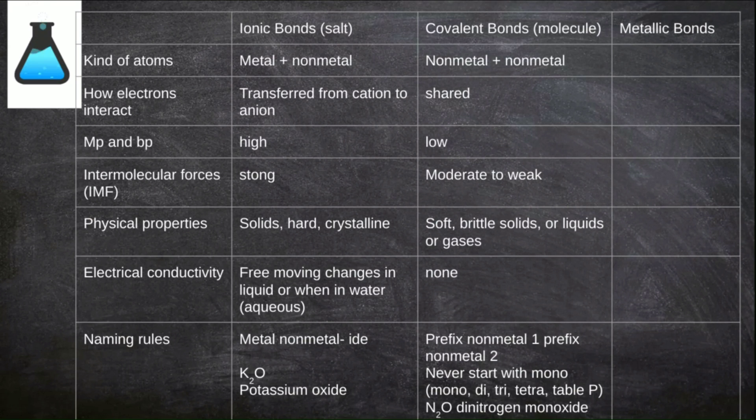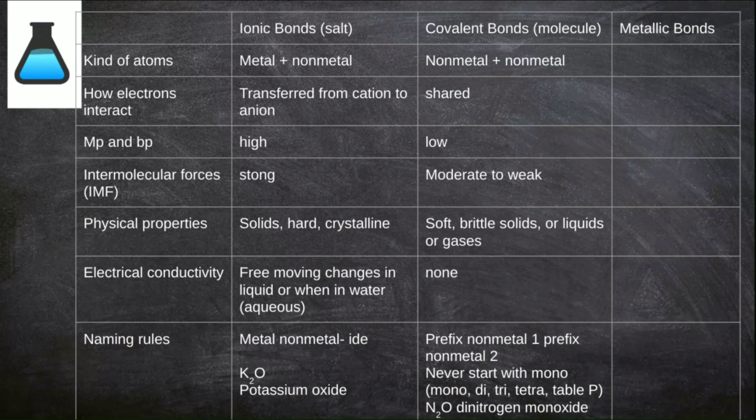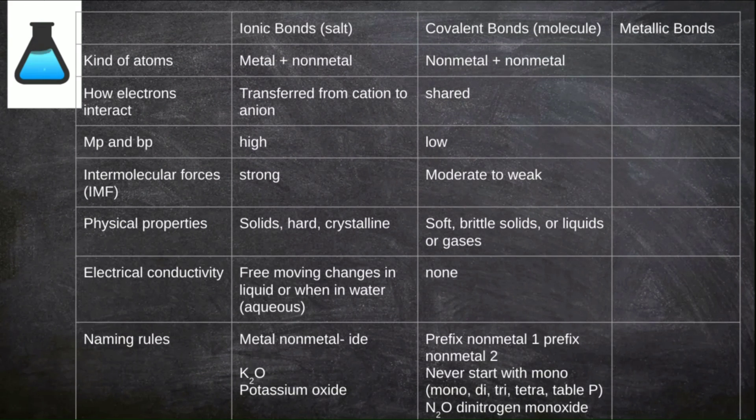Ionic bonds produce compounds called salts while covalent bonds produce compounds called molecules. Ionic bonds typically are between metals and nonmetals. They form when the metal cation transfers its electrons to the nonmetal anion. Covalent bonds create molecules where two nonmetals share their electrons. The nature of the elements within the bond impact the physical properties we see amongst compounds with these types of bonds. Ionic bonds have strong intermolecular forces. That means they have a strong force holding one compound particle next to its neighbor. This results in ionic compounds generally having high melting points and boiling points, and they're generally solids with hard crystalline structure at STP.